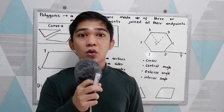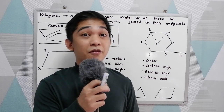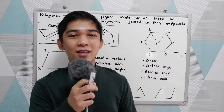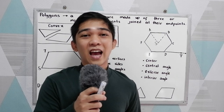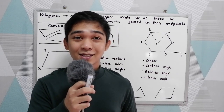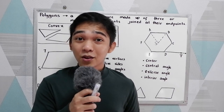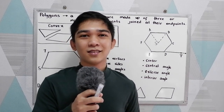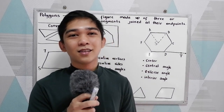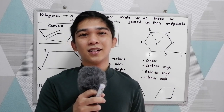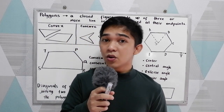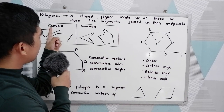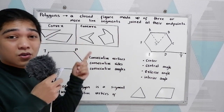Polygons are classified according to their number of sides. If a polygon has three sides, that is a triangle. If a polygon has four sides, that is a quadrilateral. If a polygon has five sides, that is a pentagon. If a polygon has eight sides, that is an octagon. And if a polygon has ten sides, that is a decagon.